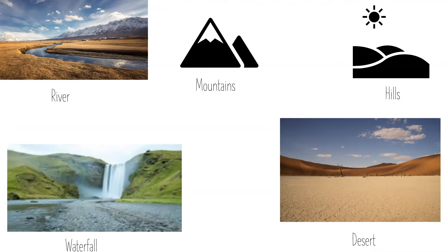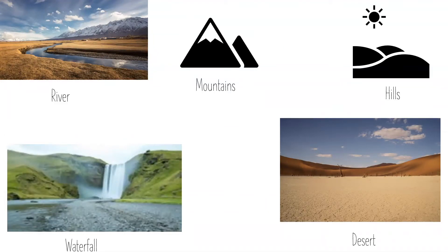Our last landform to cover is desert. Don't mix up desert and dessert — a desert is a sandy, very dry and hot place with no water source. A dessert is something you eat after dinner, like ice cream or donuts. We're not talking about that right now — this is not language class!